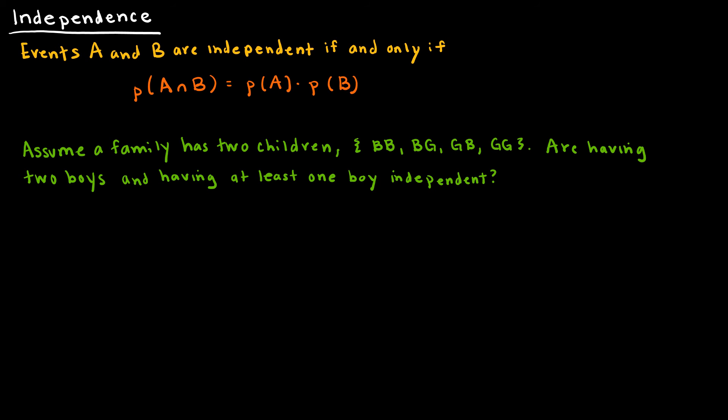Independence is something we haven't talked about yet. Independence is a way for us to know if the outcomes of one event affect another event. We can formalize that definition by saying events A and B are independent if the probability of A intersect B equals the probability of A times the probability of B.